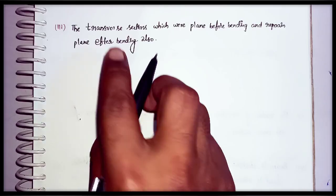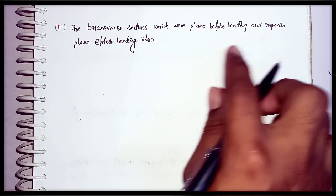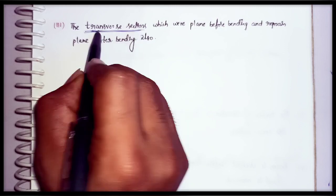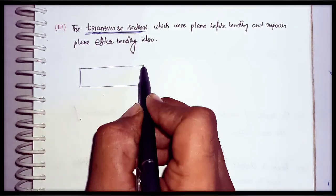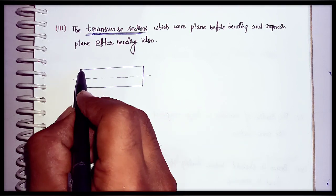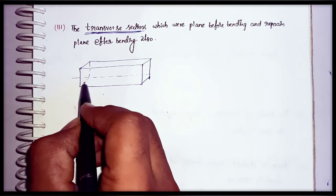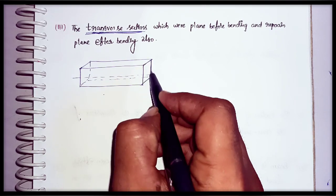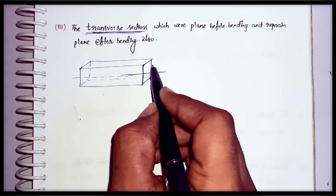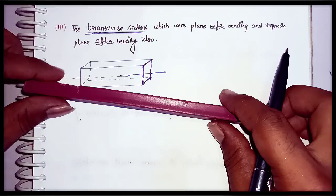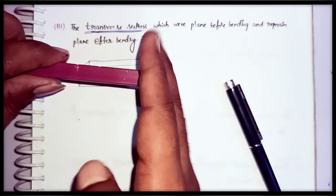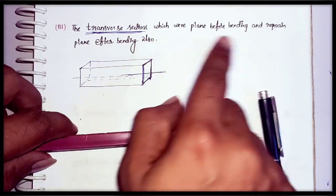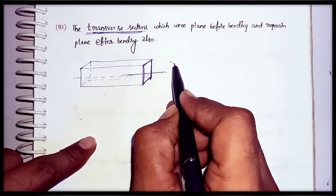The next assumption is that the transverse sections are plane before bending and remain plane after bending. A transverse section is a section perpendicular to the longitudinal axis. Considering a 3D beam diagram, the plane which is perpendicular to the longitudinal axis is called a transverse section. These transverse sections were plane before bending.